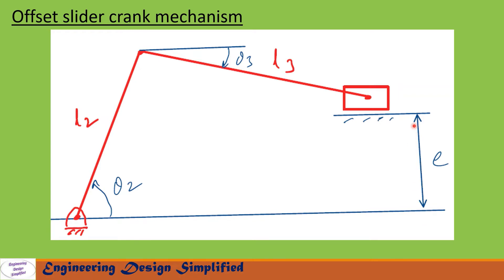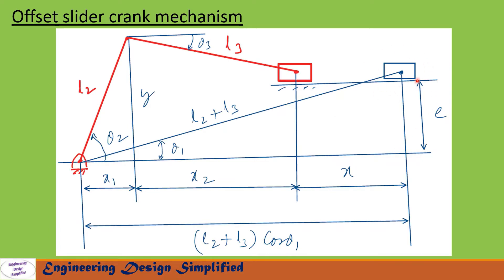Let us see in the coming slides how to derive equations to find slider displacement, velocity, and acceleration using analytical method. This is the rightmost position of the slider, where the crank and coupler are coming in line. The distance from the crank center to the center of the slider is l2 plus l3. Let us call the angle between this line and the horizontal theta1, and this extreme position from crank center to extreme end of the slider is l2 plus l3 into cos(theta1).